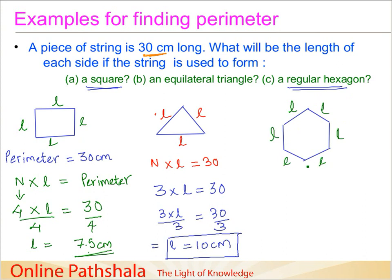Again we can use the same rule that N times L is 30, because when I start from here and come back here, I should have used 30 cm long string. So we know that the perimeter of this is 30 cm. Since it is a hexagon, so it is 6. We have 6 times L equals 30. When I divide by 6 on both the sides, what we get is L equals 5 cm.